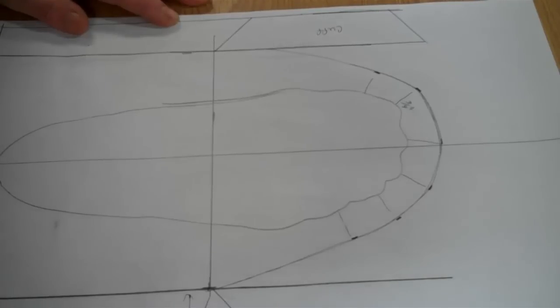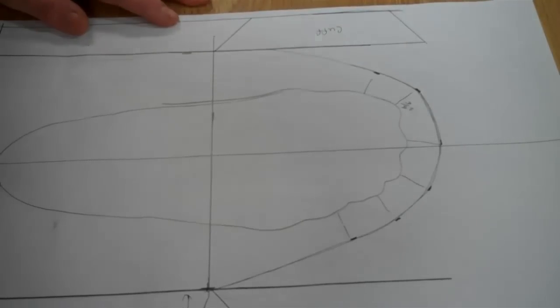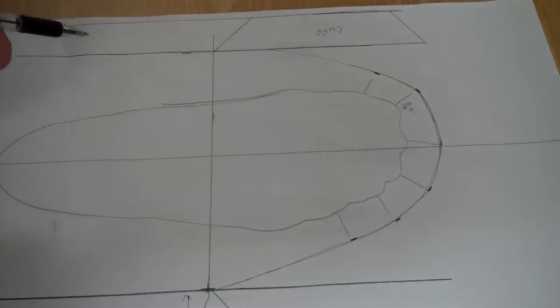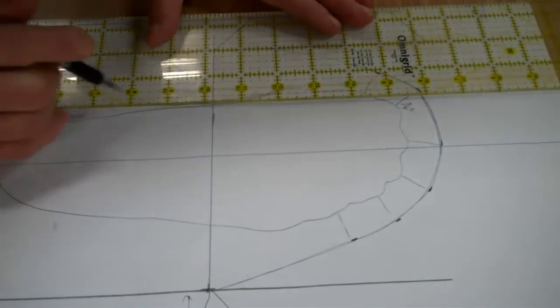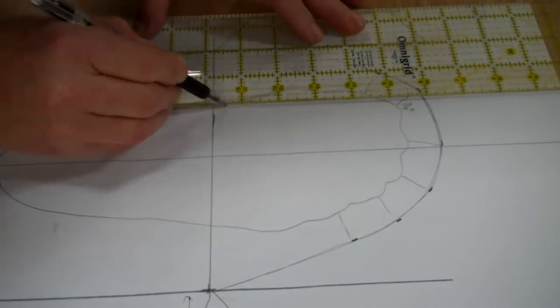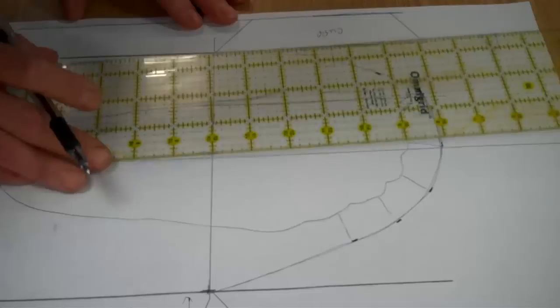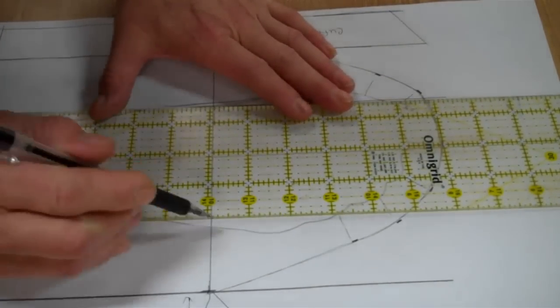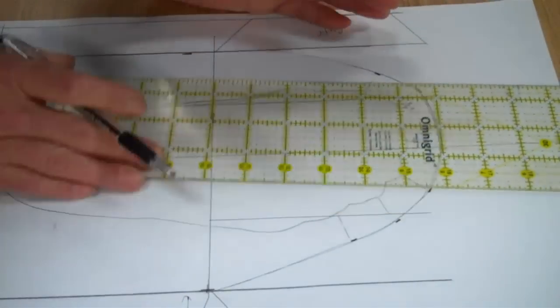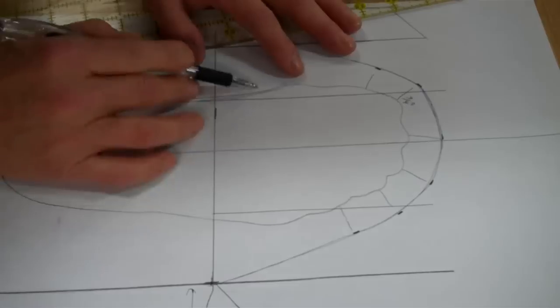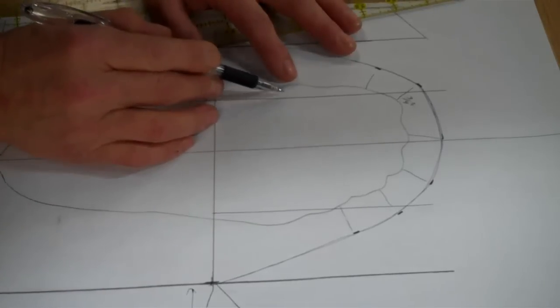And then for making the vamp, what you would do is measure in a quarter inch on the inside of your foot. Making sure that you line these two lines up with the outside of your foot, about a quarter inch spacing.